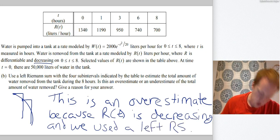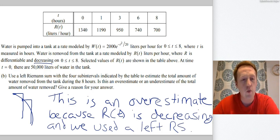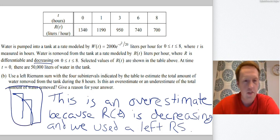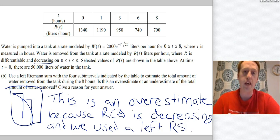So if I draw rectangles where the left corner touches the function, I can see that I'm overestimating. I get a little bit too much area. So what I'm going to say is this is an overestimate because R of T is decreasing and we use the left Riemann sum. Now that drawing is for you. This little sketch over here, that's for you to justify. That's not a reason for your answer. You have to explain in words what's going on. So that drawing is just to help you formulate your response.